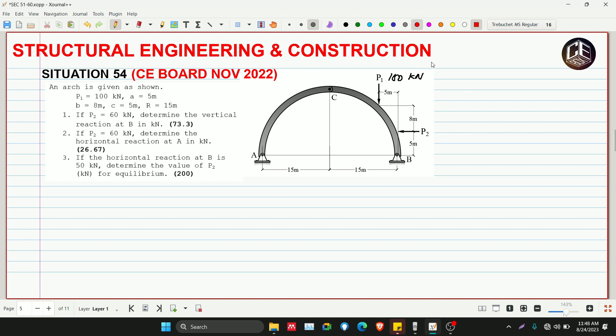Since there are three pins, this is called a 3-hinge arch under the topic of structural theory, cables and arches. Why do we need to identify what kind of structure this is? By determining the classification of our structure, we'll know how to analyze it. Since these are just pin connections, we can isolate them member by member. Now, if P2 is equivalent to 60 kilonewtons, determine the vertical reaction at B in kilonewtons. This is easy.